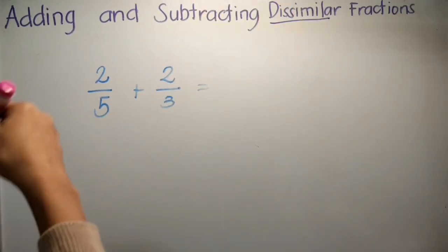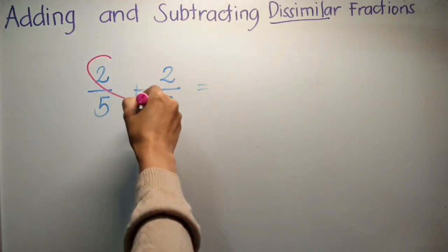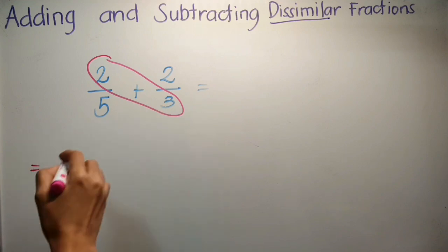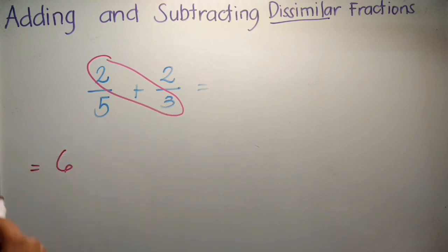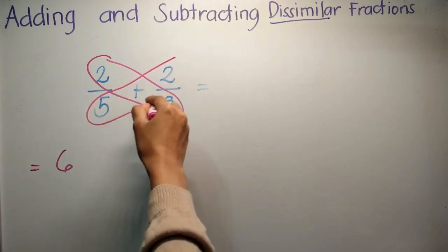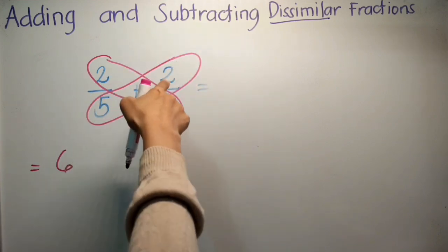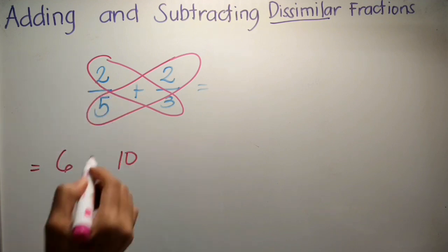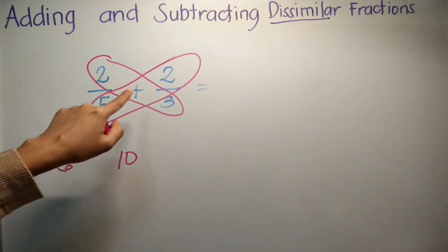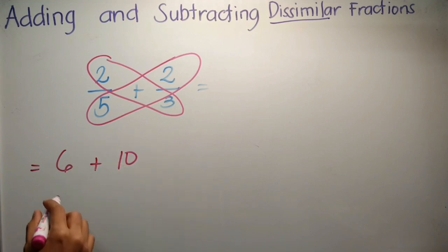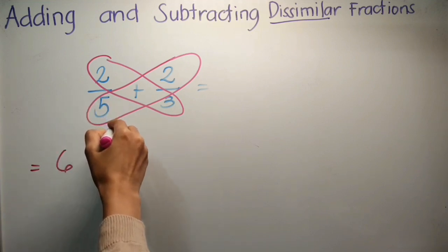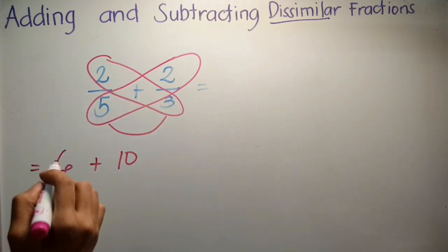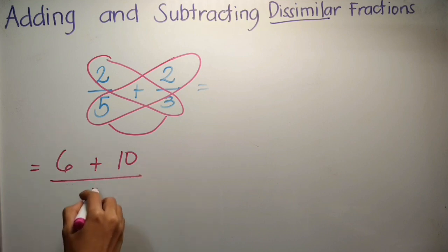Let's do it again. Step 1, multiply 2 and 3 — so 2 times 3 equals 6. And then, multiply mo tong dalawa — 5 times 2 equals 10. Now, copy the operation, and then tsaka mo i-multiply itong nasa baba. Mukha na siyang butterfly, diba?